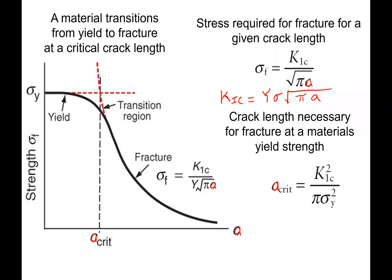If we rearrange this and solve for the fracture stress, we get K1c over the square root of pi·a. In this example they allow Y equal to one, giving us the plane strain condition where the crack is very small compared to the dimensions of the sample.